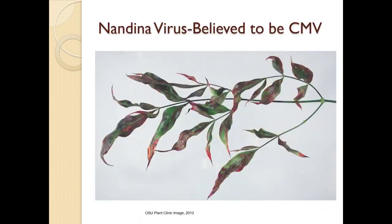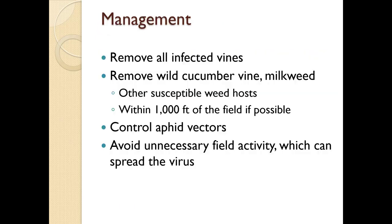This is what cucumber mosaic virus looks like on Nandina — it crosses family lines. Management includes removing all infected vines or plants, removing wild cucumber, vine, milkweed, and other susceptible weed hosts, keeping them outside of 1,000 feet of the field if possible, controlling aphid vectors, and avoiding unnecessary field activity which can spread the virus.